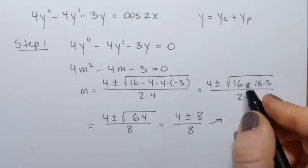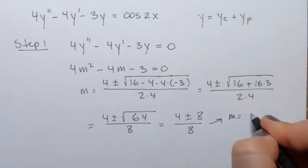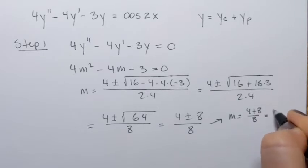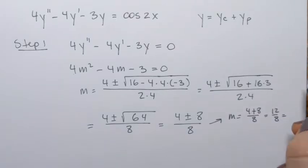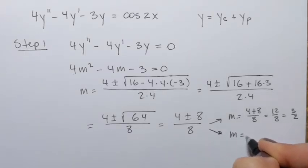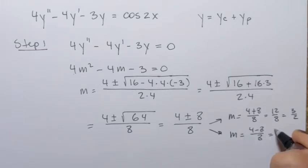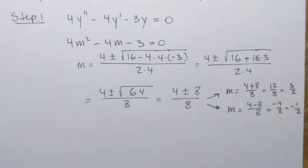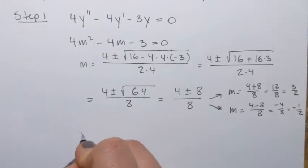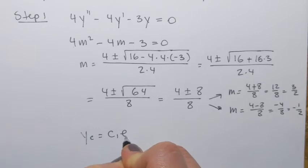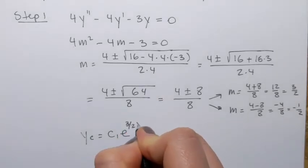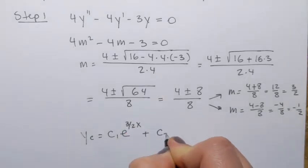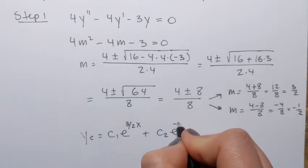From here, we get m equals 4 plus 8 over 8, that's 12 over 8, which simplifies to 3 halves. Or m equals 4 minus 8 over 8, that's negative 4 over 8, which is negative 1 half. So the complementary function — the general solution to this homogeneous equation — is c1·e^(3/2·x) plus c2·e^(-1/2·x).